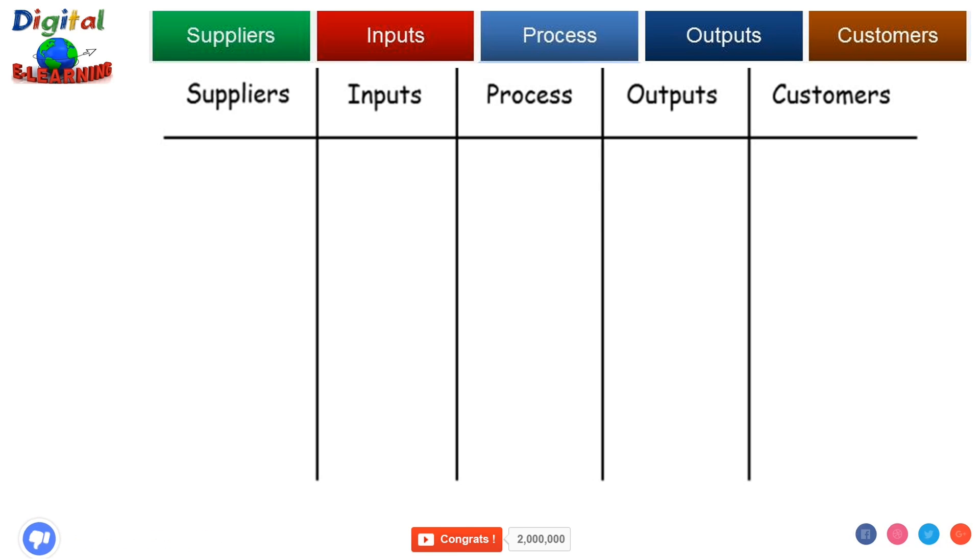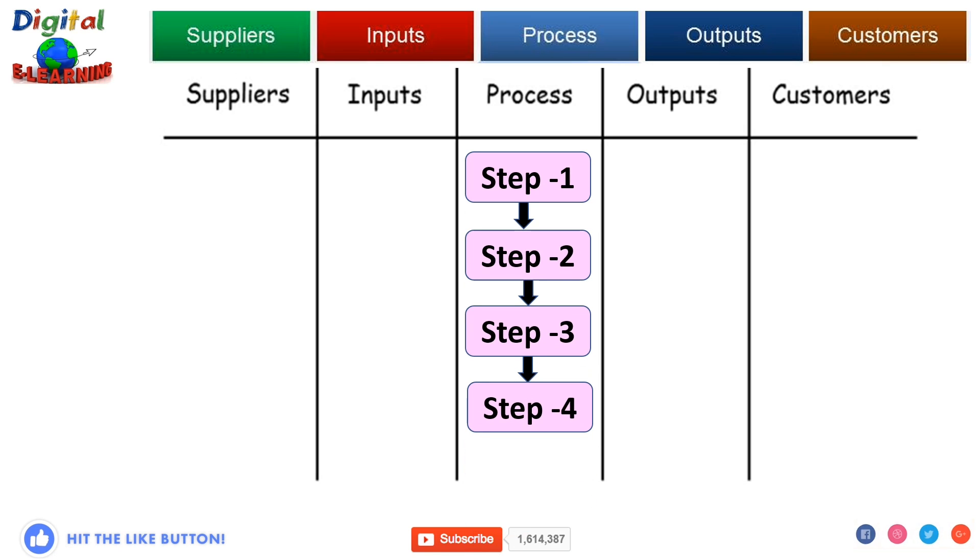To construct a simple SIPOC diagram, start with a table with five columns. List them as Supplier, Input, Process, Output, and Customer. Then start with the Process. If you have decided to construct a SIPOC diagram, you should already probably know what your process steps are going to be. Write them in the middle of the Process column. You can either list them or draw them using a flowchart to make it easy to comprehend.